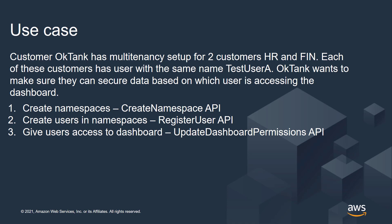Before getting into that, let me show you how to initially set up multi-tenancy: how to register users and update a dashboard to be accessible by those users. You can create multi-tenancy by creating multiple namespaces using the CreateNamespace API. Once you create the namespace, you can use the RegisterUser API to add users to each namespace. Then you can use UpdateDashboard permissions to grant those users access to the dashboard. I have done each of these steps, so I'll quickly show you what namespaces I've created, what users I've registered, and the dashboard to which I've given permissions.